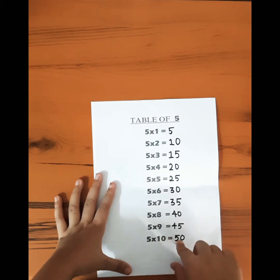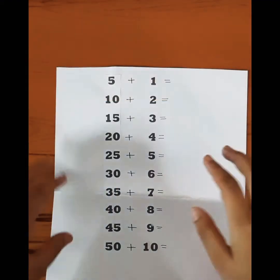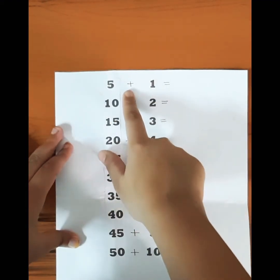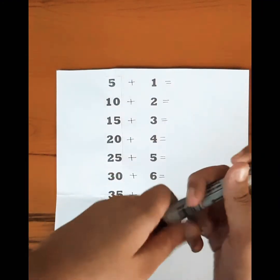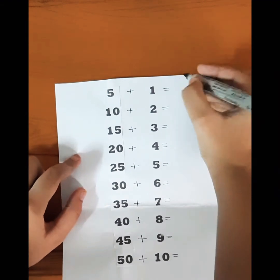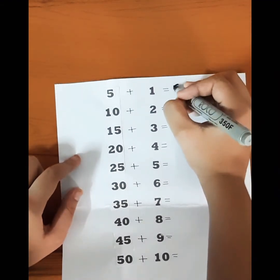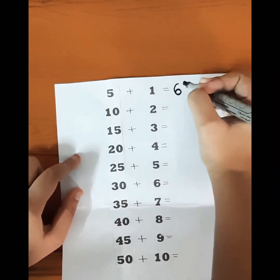So this side is the five table. And then you have to write plus, and then you have to write one to ten numerals. And then if you just add it, you will get the answer. So five plus one...